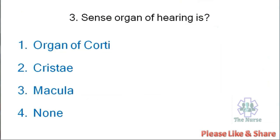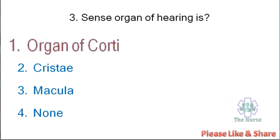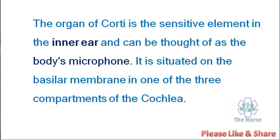Next question: Sense organ of hearing is — organ of Corti, cristae, macula, or nanof? Correct answer is organ of Corti. The organ of Corti is the sensitive element in the inner ear and can be thought of as the body's microphone. It is situated on the basilar membrane in one of the three compartments of the cochlea.